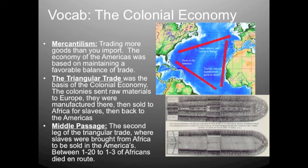First, some vocabulary. Mercantilism is the idea of having a favorable trade balance, meaning you sell more things than you buy. The economy of the Americas was based on maintaining a favorable trade balance with the motherland, England, and the rest of the world. The triangular trade is what we discussed previously, and the Middle Passage was an important part of it — where slaves were imported from West Africa to the Americas.